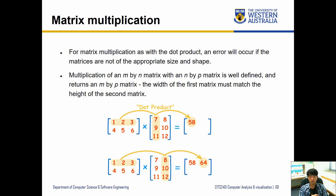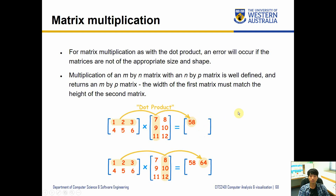Moving on to matrix multiplication: the dot product of two matrices requires taking the dot product of the rows and columns of the two matrices, then placing the result in the corresponding position. The first row and first column produce the first-row, first-column entry of the result, and so on. If you multiply an m×n matrix with an n×p matrix, the result is an m×p matrix. So a 2×3 and a 3×2 matrix will produce a 2×2 result.